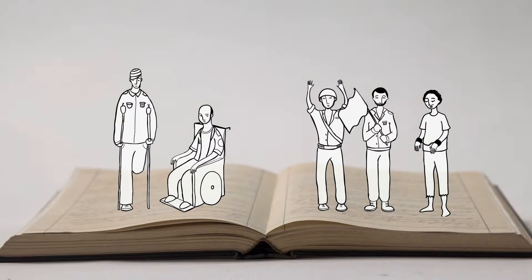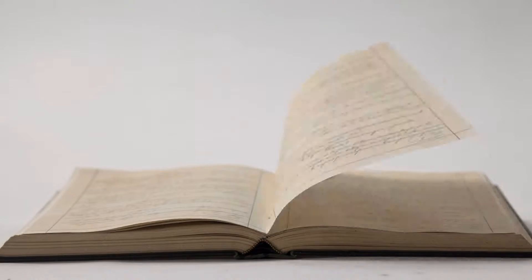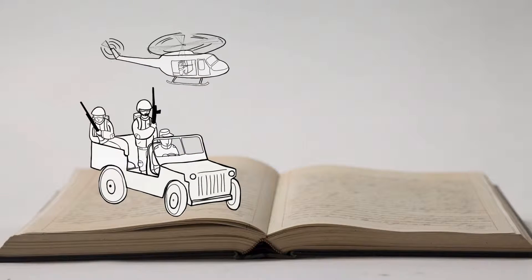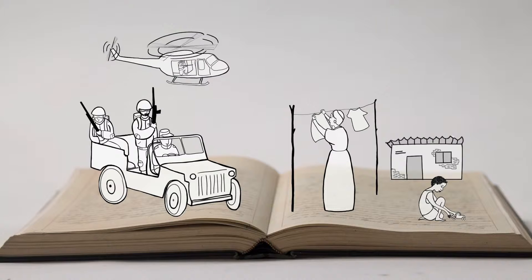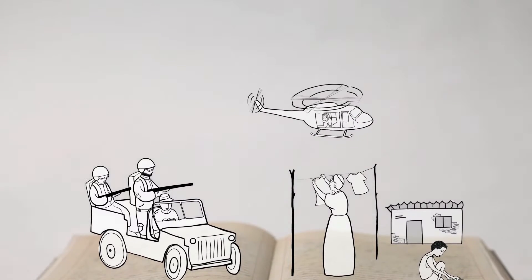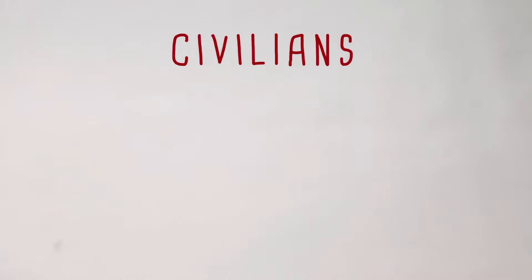To do this, a distinction must always be made between who or what may be attacked and who or what must be spared and protected. Most importantly, civilians can never be targeted. To do so is a war crime.